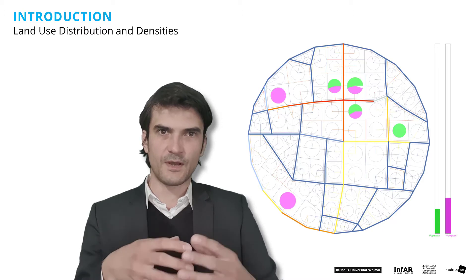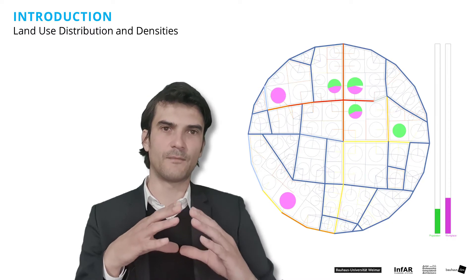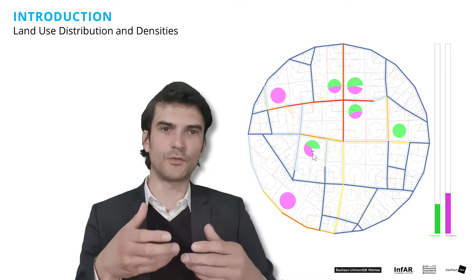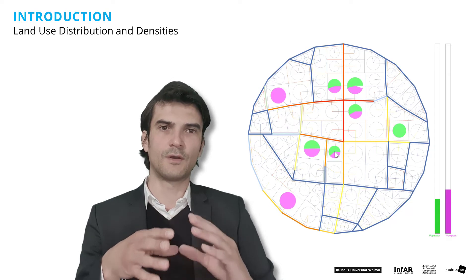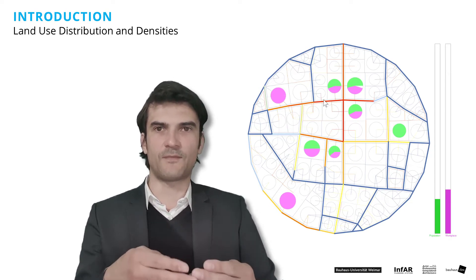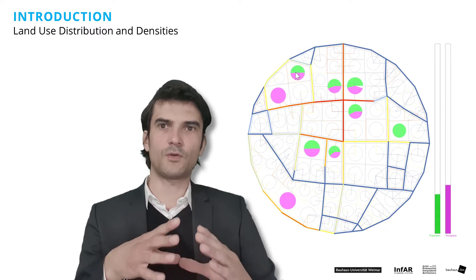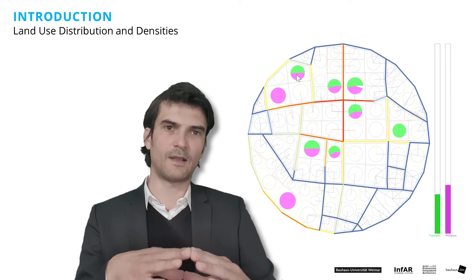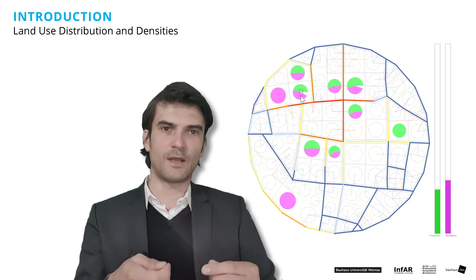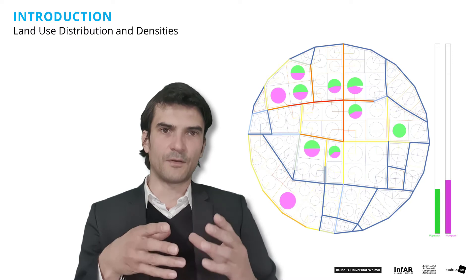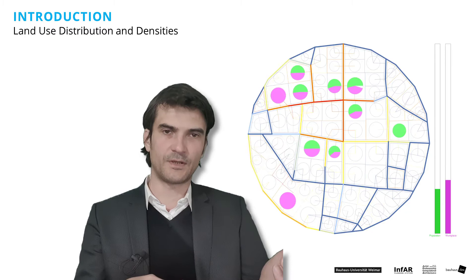Of course, our model only roughly estimates, but as mentioned, for urban planning purposes, where we don't know exactly how things will work in the end, it's a very good tool for using the information that we have at the moment. Therefore, for our model, we keep most parameters constant, like the geometry of the street network and many other things that you cannot manipulate in this lesson.